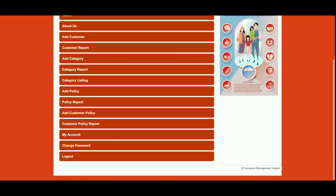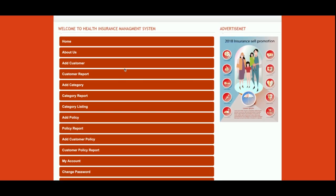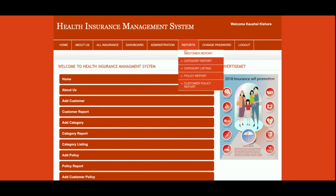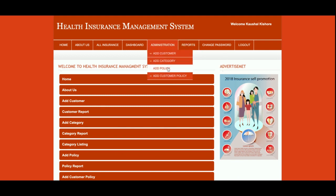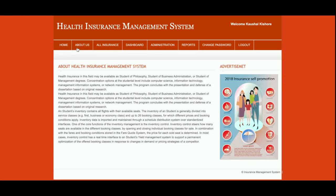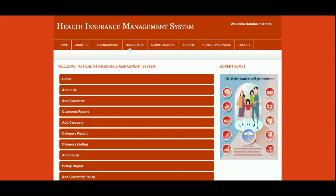Once you log into the system as admin, you will get this dashboard. You can see there are a lot of functionalities. The dashboard options are also available on the header menu. There are five modules available in the system including the admin module, and there are many pages available inside the system. The home page, About Us, and All Insurance pages have already been explained — now let's go through the admin section.